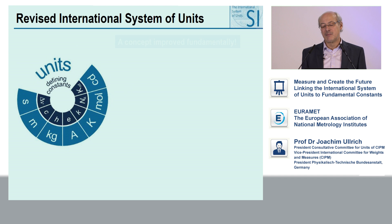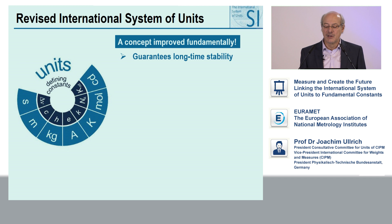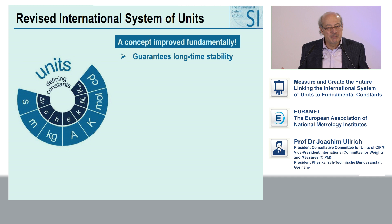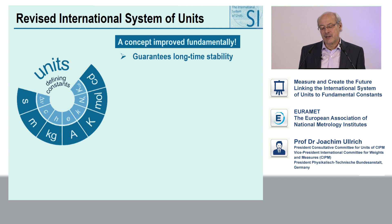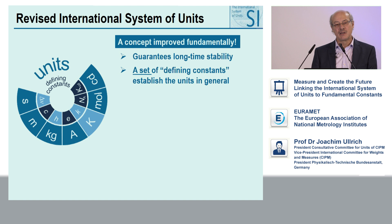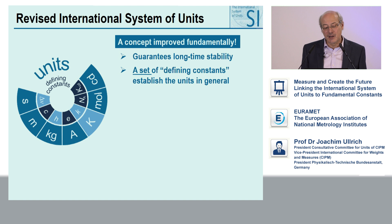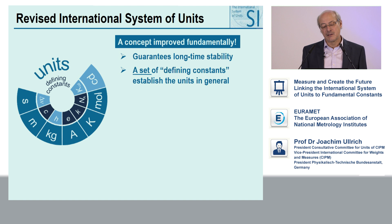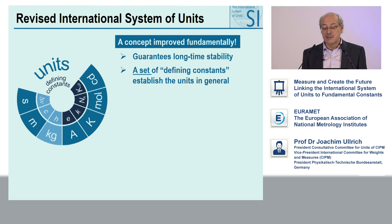This is a fundamentally improved concept for several reasons. First, it guarantees long-time stability — by fixing the numerical values of fundamental constants, nothing can be changed; it cannot fall down or change like the kilogram. You need a set of these defining constants fit into equations in order to realize a unit. For instance, for the Kelvin you need delta-nu, the Planck constant, and the Boltzmann constant. For the candela, you need delta-nu, the Planck constant, and luminous efficacy. For the kilogram, you need delta-nu, the speed of light, and the Planck constant.